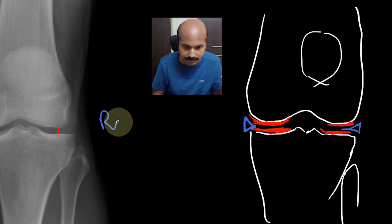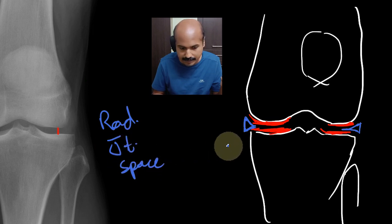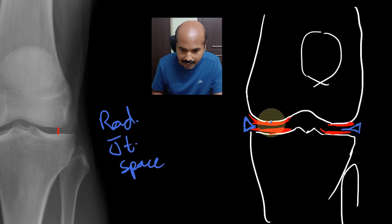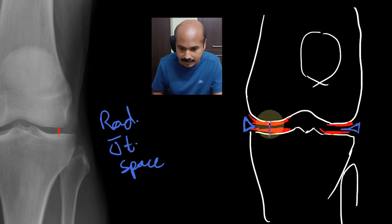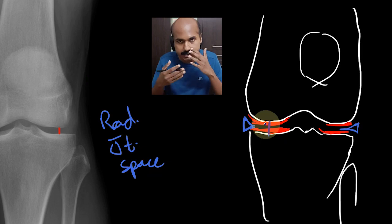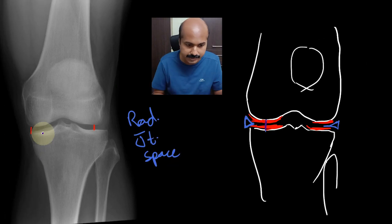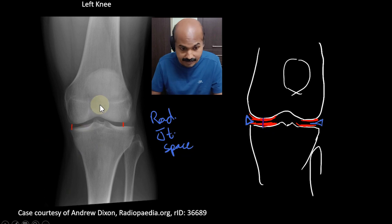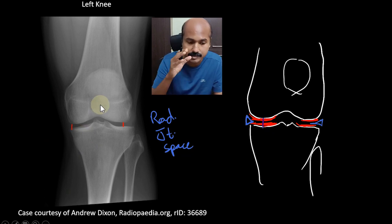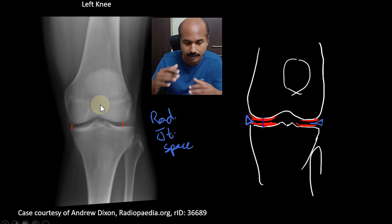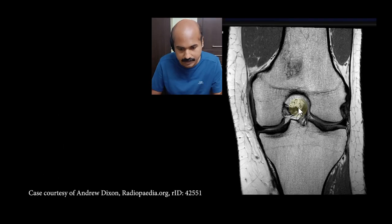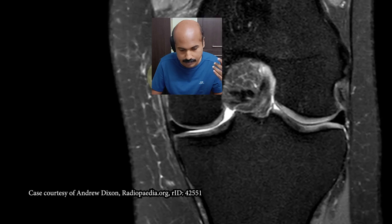What you actually see as this space is called the radiological joint space. The radiological joint space is, in reality, filled with cartilage — it is the region where you have cartilage. Since cartilage is radiolucent, you see through it, which is why it appears as a space. Anatomically it is not a space; it is just a radiological space filled with cartilage. You can see corresponding articular cartilage on MRI — in proton density fat-sat sequences, the cartilage is more clearly visualized.